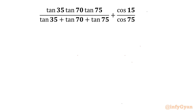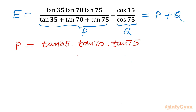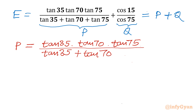Let's get started by writing the given expression. I will call it E, where the first term is P and the second term is Q, so ultimately we will calculate P and Q then add them. I will consider 35 degrees as A, 70 degrees as B, and 75 degrees as C.